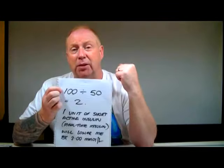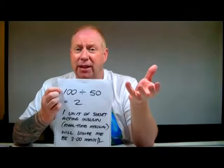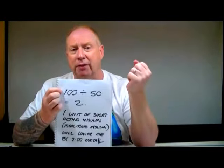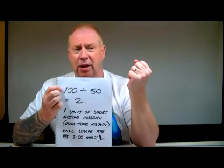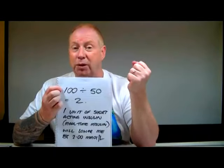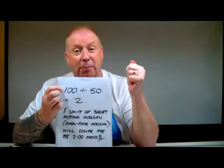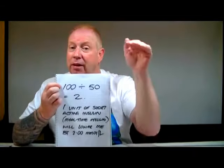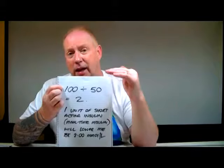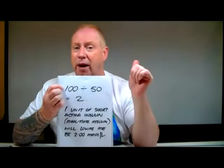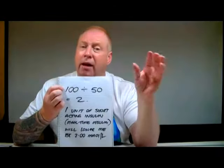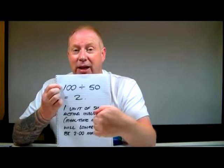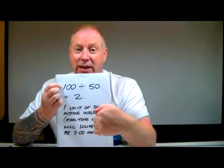So, if I test my sugar level 3 to 4 hours after eating, and I've taken my 6 units, and my sugar level is 12 or 14 millimoles per liter — and I really expect to be around about 6 or 7 — I can correct the difference. For example, let's say I want it to be 6, but 4 hours after eating it's actually 12. I want to correct 6 millimoles, so I inject 3 units of short-acting insulin.